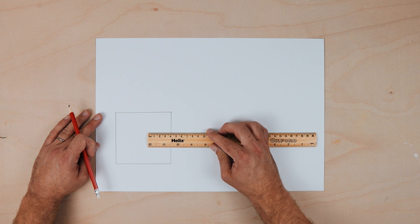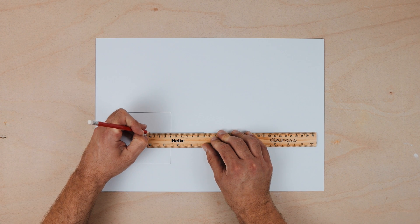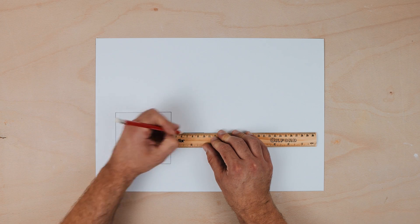All you need to do is draw the exact same square again but this time you're going to overlap it onto the corner of the original square.